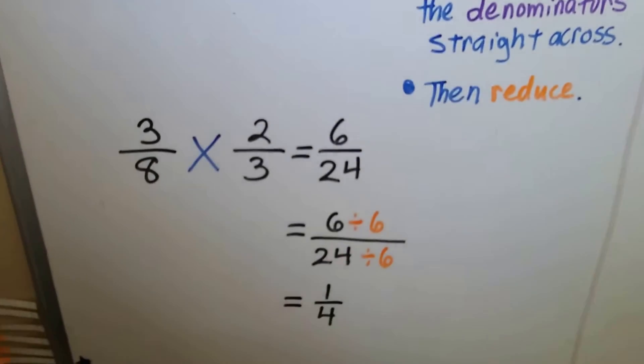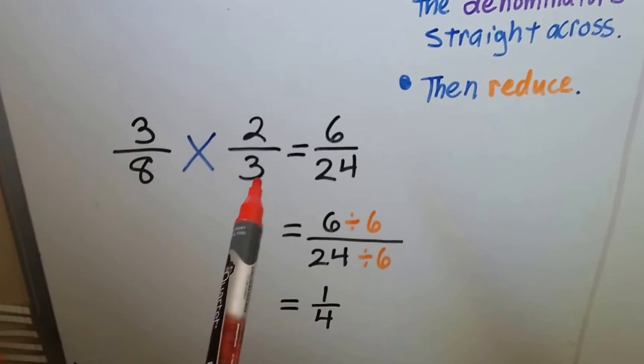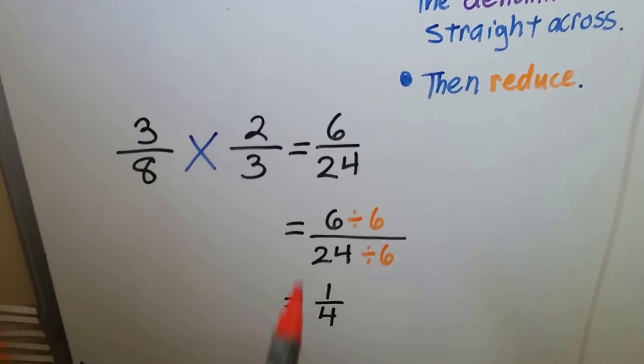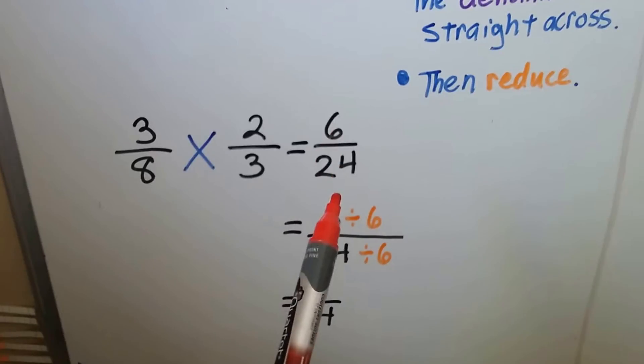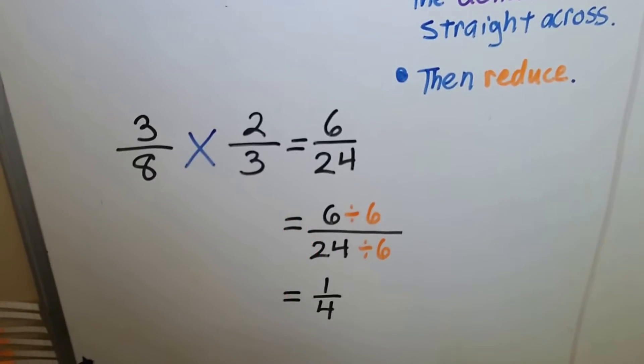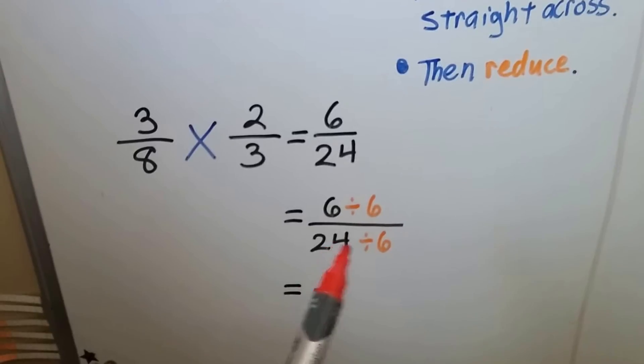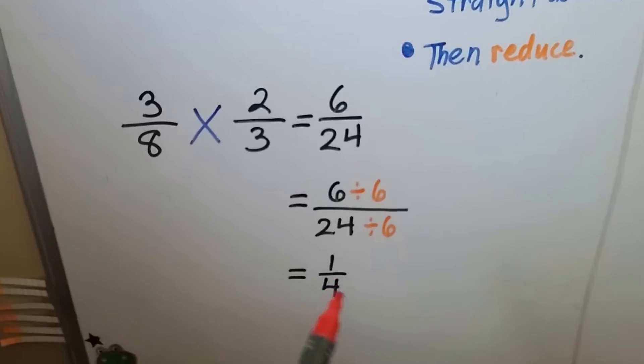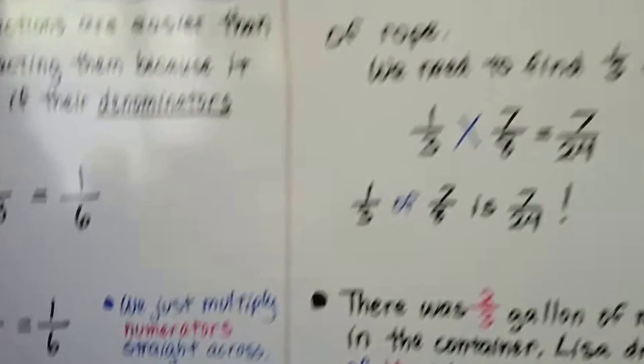If we have 3/8 times 2/3, we multiply the 3 times 2 straight across and get a 6, we multiply the 8 times 3 straight across and get a 24. Now this needs to be reduced. We find the biggest number that will fit the 6 and the 24, the biggest multiple. 6 would be a good one. We could use 2, but then we'll reduce and reduce. So if we use 6, we'll do 6 divided by 6 and 24 divided by 6. It has to be the same number. And this is a 1, and that's a 4. We get 1/4. So you're going to learn lots of shortcuts in this video. Hopefully it'll be very helpful to you.